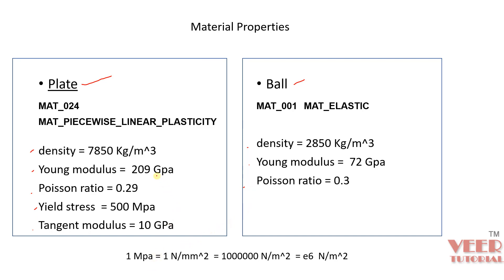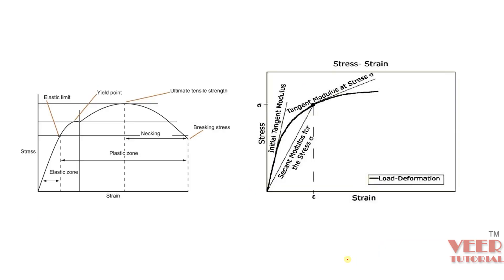In this problem we are working in units of meters, but the given values are in millimeters. One megapascal equals one Newton per mm squared, so when we convert to meters we need to input the value as 10 to the power 6, or in the FEM software as E to the power 6. Similarly, when we have gigapascal we need to use E to the power 9.